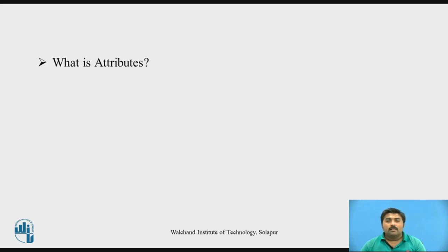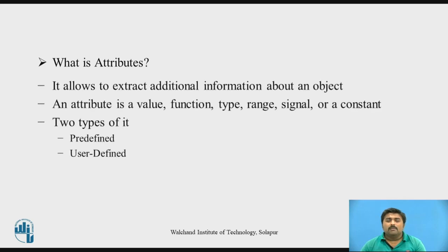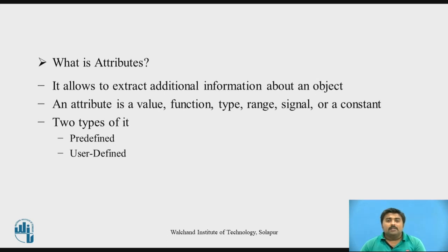Before starting with the actual session, let's think about what attributes are. Attributes are nothing but a way to extract additional information about an object. For example, if you have a signal in your VHDL code, that signal's additional information includes whether the signal has a positive edge, what is the value of that signal, whether it is a negative edge, and whether an event is occurring on the signal or not.